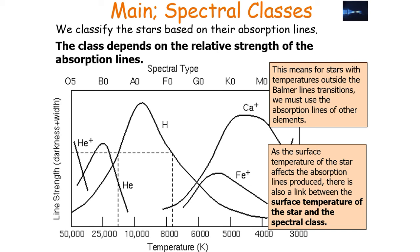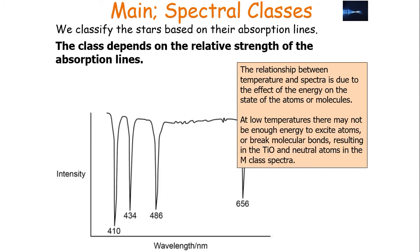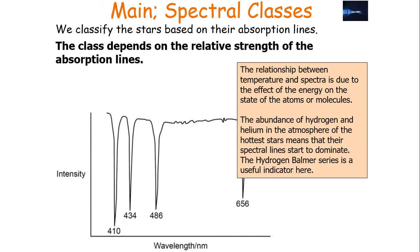As the surface temperature of the star affects absorption line production, there is a link between the surface temperature and the spectral class. As the surface temperature also determines the colour of the star, there is a link between the colour of the star and its spectral class. The relationship between temperature and spectra is due to the effect of energy on the state of atoms or molecules. At low temperatures, there may not be enough energy to excite atoms or break molecular bonds, resulting in titanium oxide and neutral atoms. At higher temperatures, atoms have too much energy to form molecules and ionization takes place, and the abundance of hydrogen and helium means their spectral lines start to dominate.